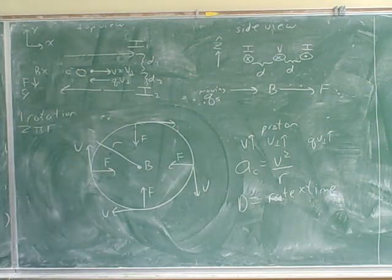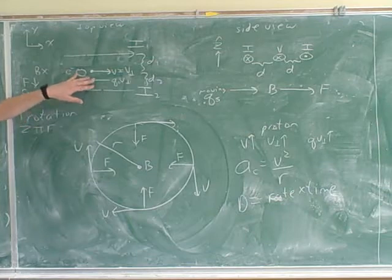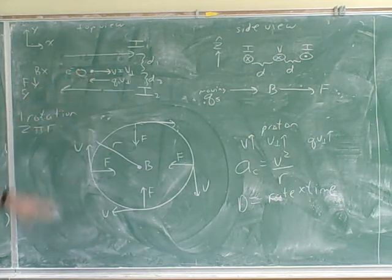And if a circle is very small, the magnetic field will be approximately uniform. Since you're not moving very much, the magnetic field will be about the same everywhere where you are.